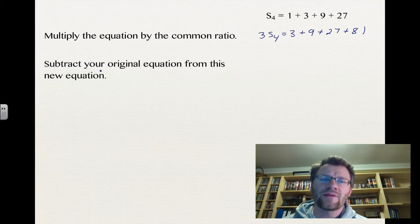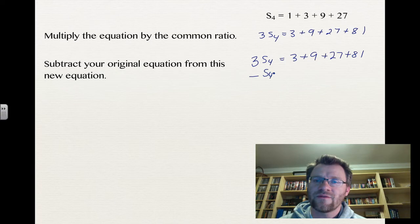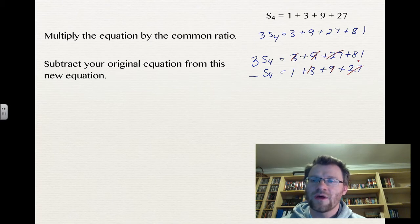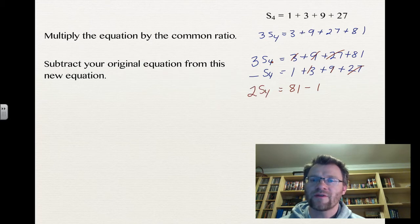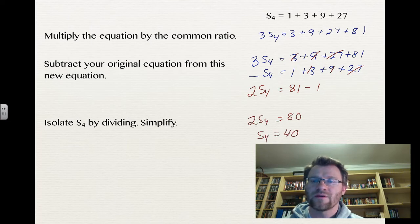Now we subtract the original equation from the new equation. So 3·S₄ equals 3 plus 9 plus 27 plus 81, minus S₄ equals 1 plus 3 plus 9 plus 27. Terms cancel: 3 minus 3 is 0, 9 minus 9 is 0, 27 minus 27 is 0, leaving 81 minus 1. On the left side, 3·S₄ minus S₄ gives 2·S₄. So 2·S₄ equals 80, meaning S₄ equals 40. We can verify: 1 plus 9 is 10, and 3 plus 27 is 30, totaling 40.